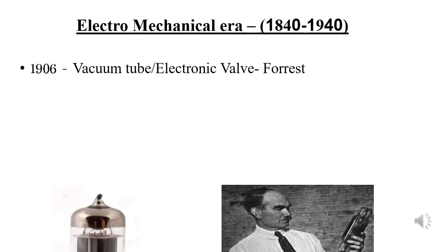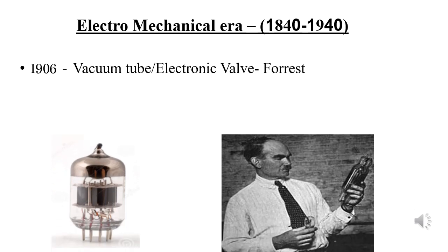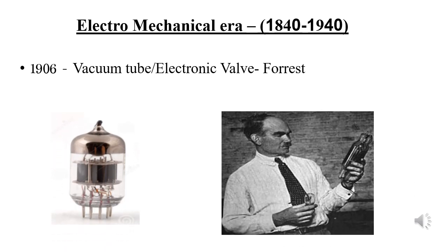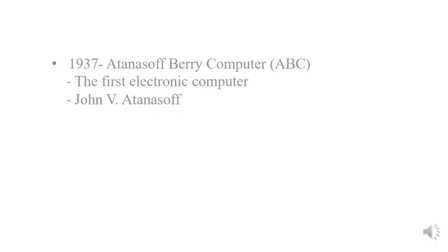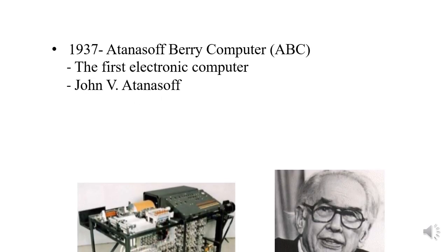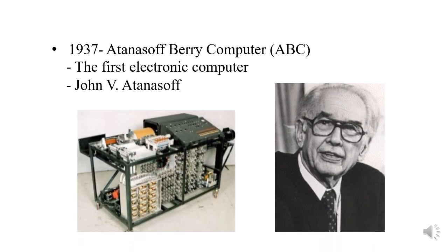Three important events took place in the electromechanical era. The first one is the discovery of the vacuum tube, or electronic valve, in 1906. The second important event was the invention of the world's first electronic computer in 1937 by John V. Atanasoff, called the Atanasoff Berry Computer.